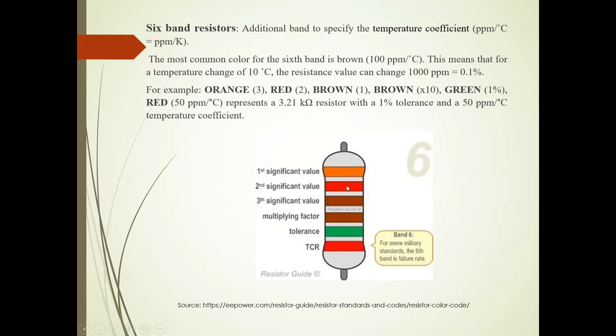First color is orange. Second is red. Third is brown. Again brown. Green. And red. So its value is orange 3, red 2, brown 1, brown 10 raise to 2 is multiplier. It is 100. Green 1%.